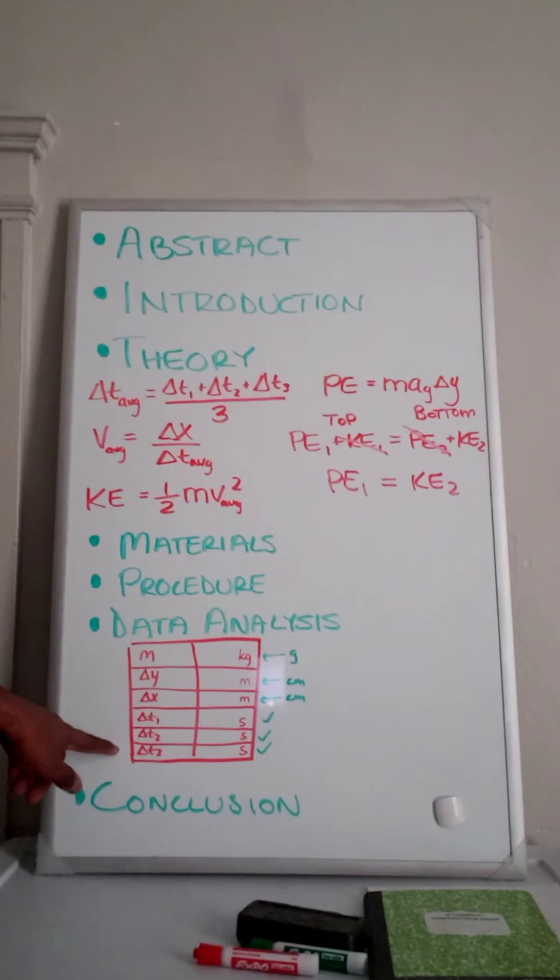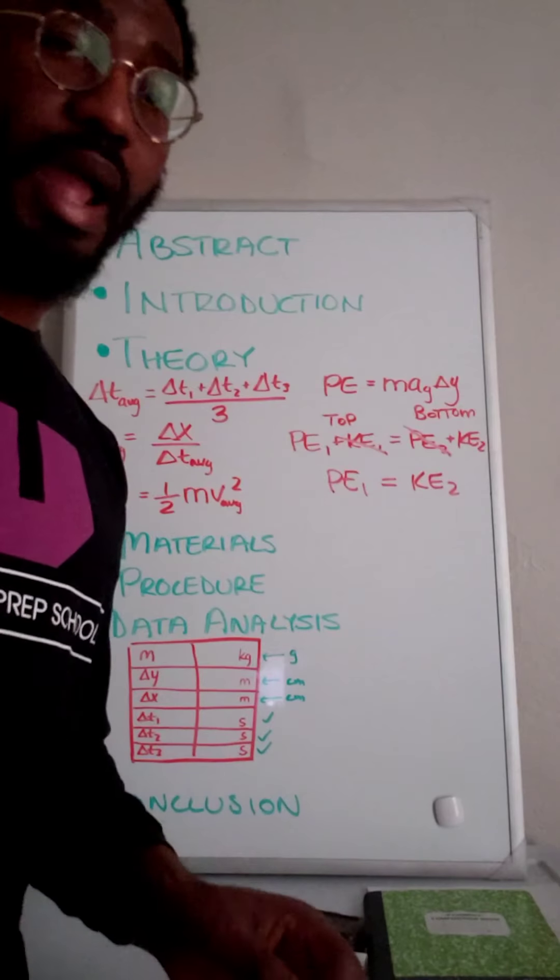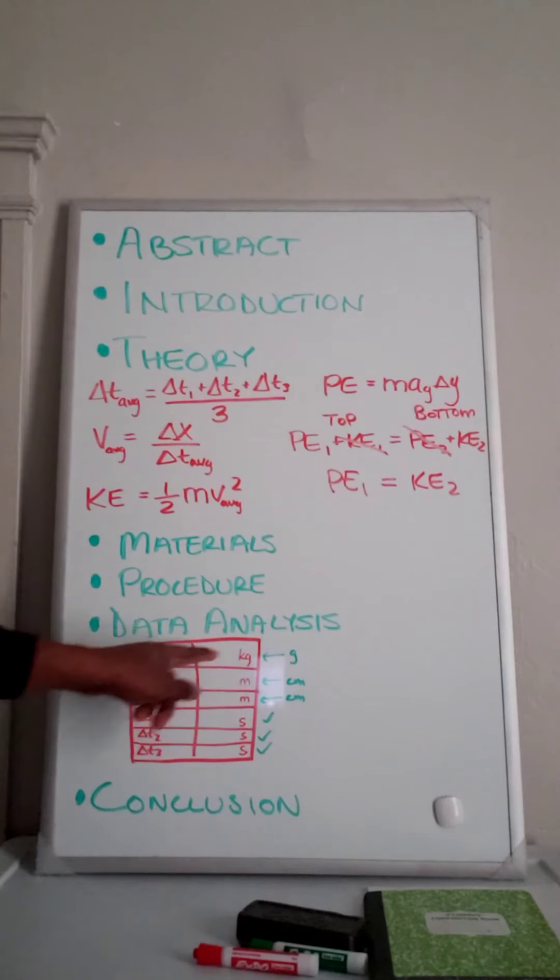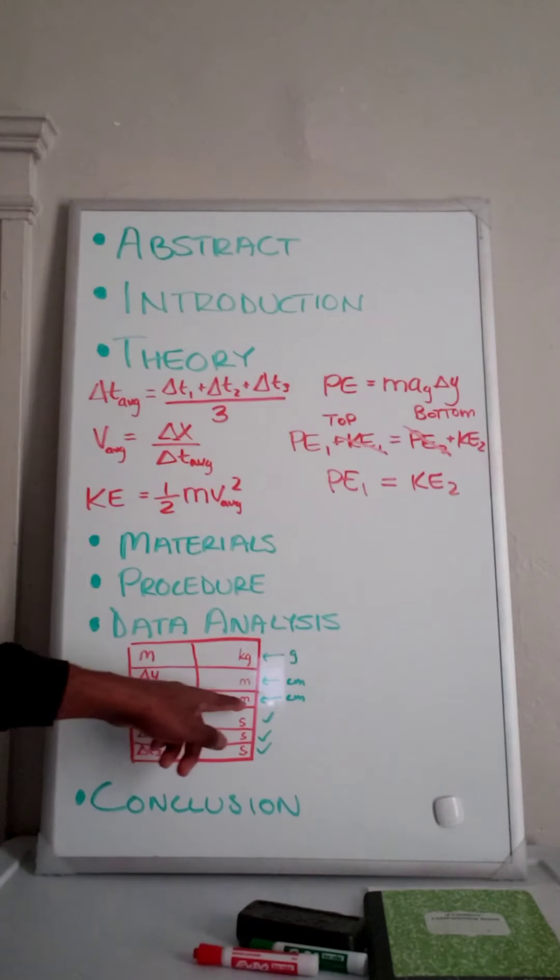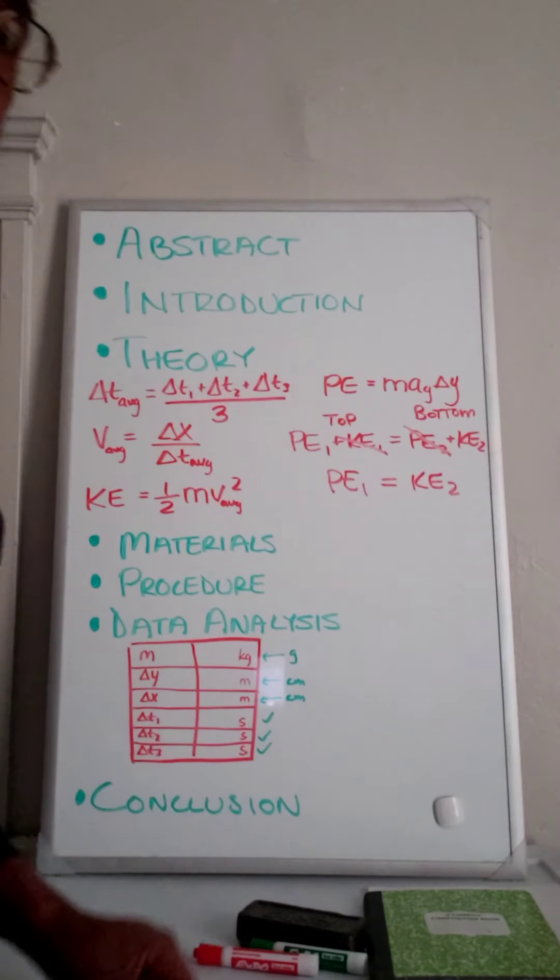A couple things about your data table itself: you're going to have six different values - the mass of the car, the height of the stack of books (delta y), the length between the two lines (delta x), and then the three time trials. You're going to have to get the units right for your data table. The mass of the car should be in kilograms, the height of the stack of books should be in meters, the distance between the lines should be in meters, and all the time trials should be in seconds.